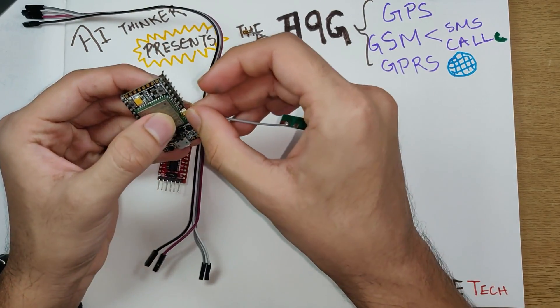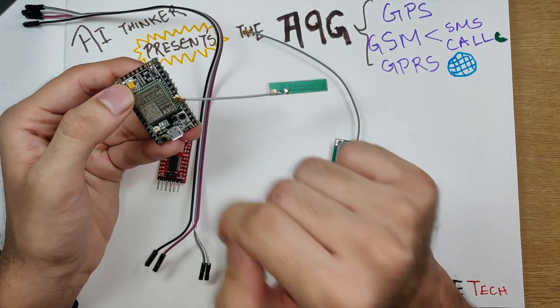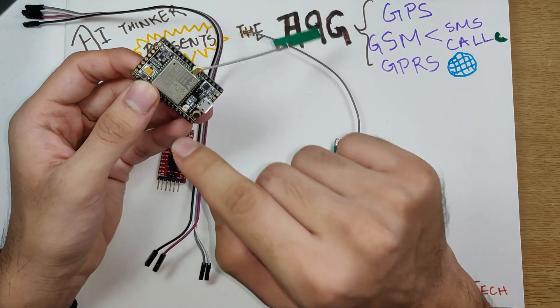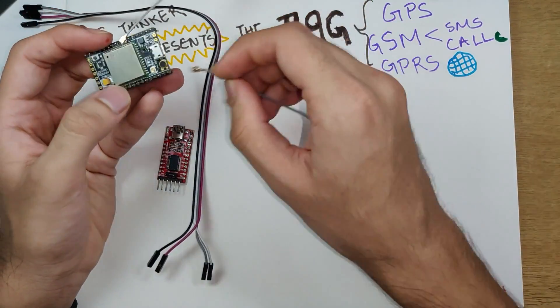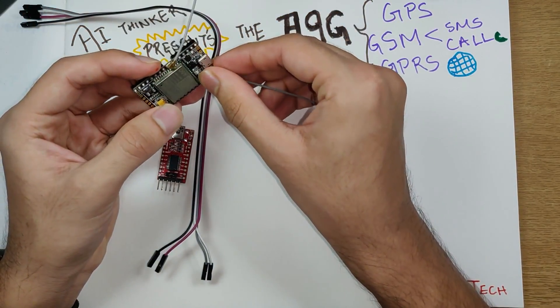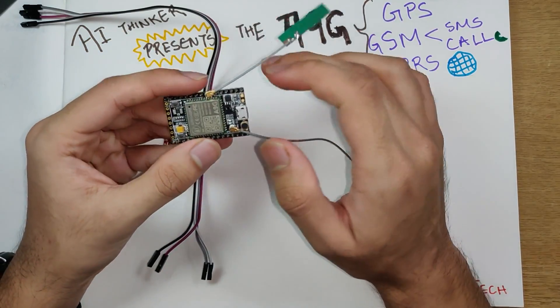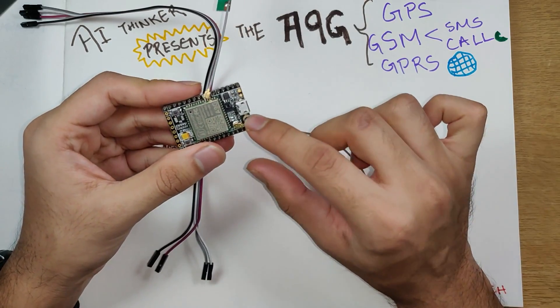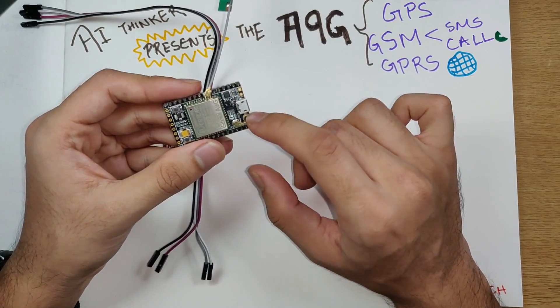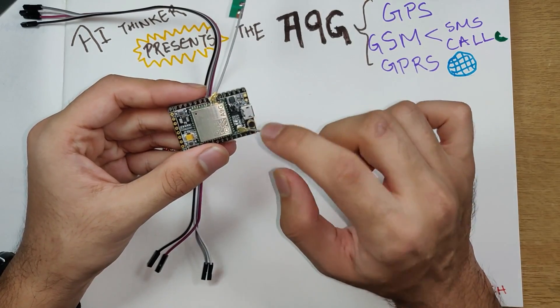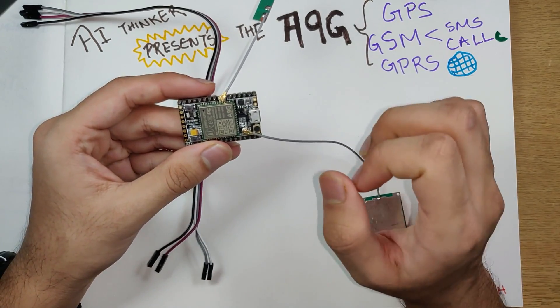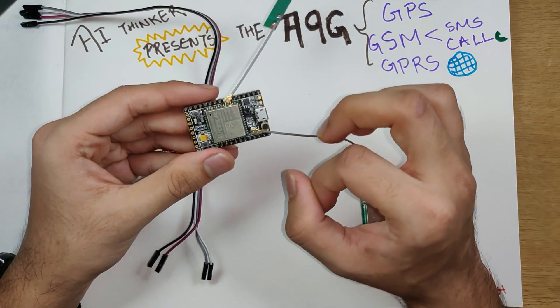When the right one keeps on blinking, that means the GPS is on. When the left one is blinking, that means the GPRS is connected or is switched on. We need a jumper cable and a USB to serial converter to send out the AT commands. You can also use an Arduino, ESP8266, ESP32, or a Raspberry Pi.